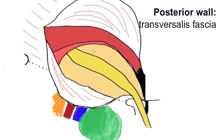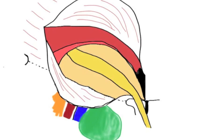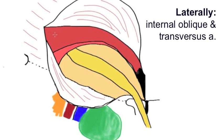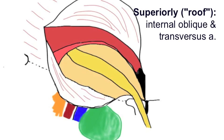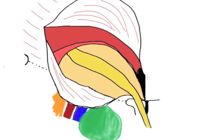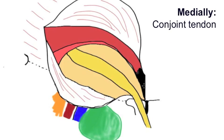The posterior wall of the inguinal canal is the transversalis fascia. Laterally, also forming the lateral border of the deep ring, are the fibres of internal oblique and the transversus abdominis. These two muscles form the superior border of the inguinal canal and then coalesce to form the conjoint tendon, which is the medial border of the inguinal canal.